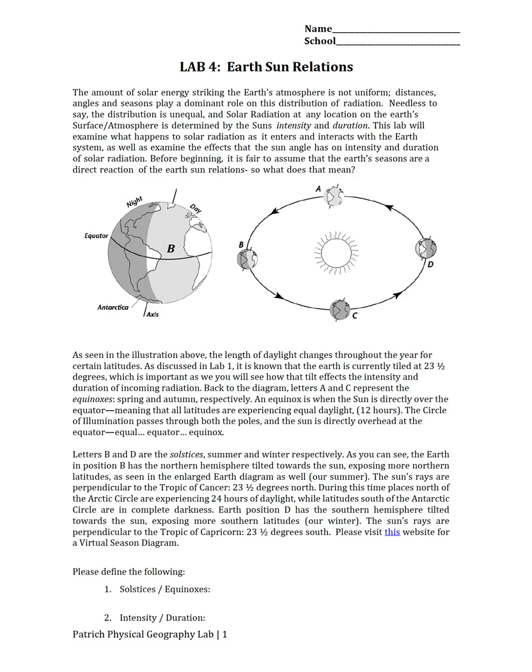So to begin, this lab in particular deals with looking at how the energy of the sun is distributed unequally over the surface of our planet. The amount of solar energy striking the Earth's atmosphere is not uniform. Distances, angles, and seasons play dominant roles in this distribution of radiation. Needless to say, the distribution is unequal, and the solar radiation at any location on the Earth's surface or atmosphere is determined by both the sun's intensity and the duration.